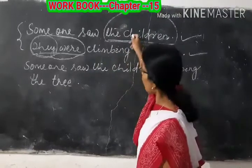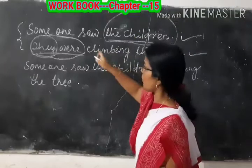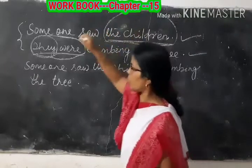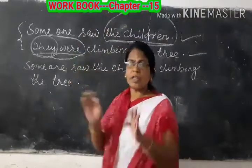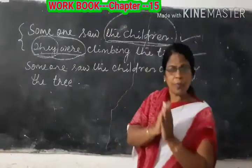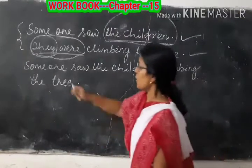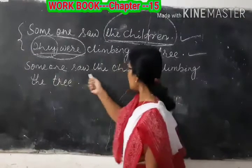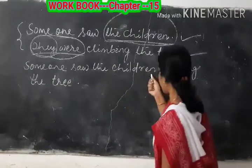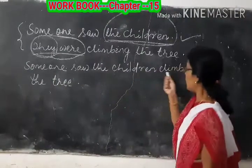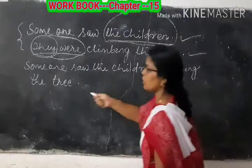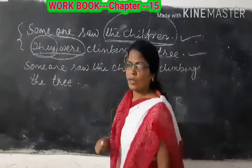Then we can join together. The common part of the sentence — the children, how they were — these are common things. Common things are what they are saying. Someone saw the children climbing the tree.